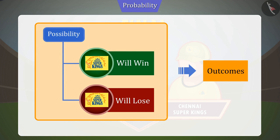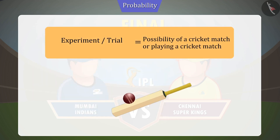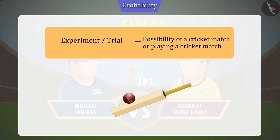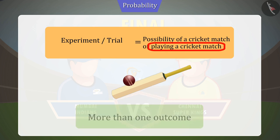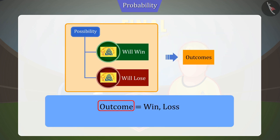We call these possibilities the outcome. Here, the possibility of a cricket match or playing a cricket match is called an experiment or trial. Playing a cricket match is an activity that can have more than one result. Therefore, we can say that the outcome is the possible result of an experiment.